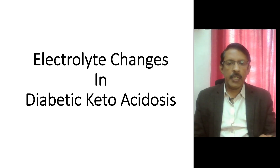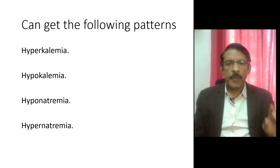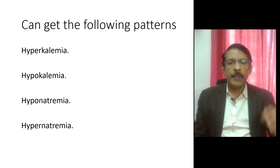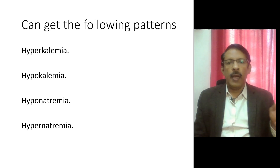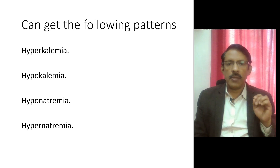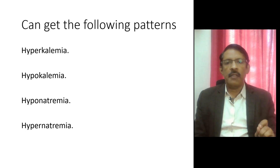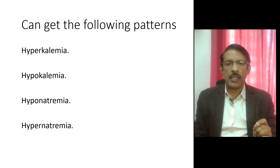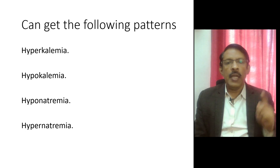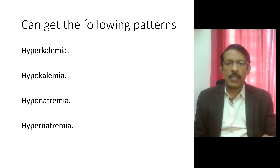Electrolyte changes in diabetic ketoacidosis. The major electrolytes we are concerned about are sodium and potassium. In diabetic ketoacidosis you can get hyperkalemia, hypokalemia, and hyponatremia. These conditions happen in different stages of the disease. Correct identification of the level and correlating it with the state of the disease is important to understand the pathophysiology and to initiate appropriate treatment. Let's take all the cases one by one.